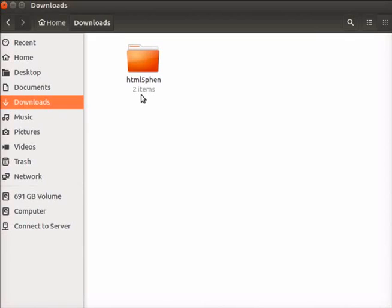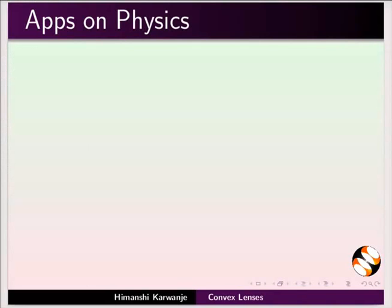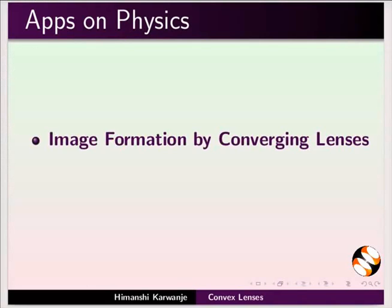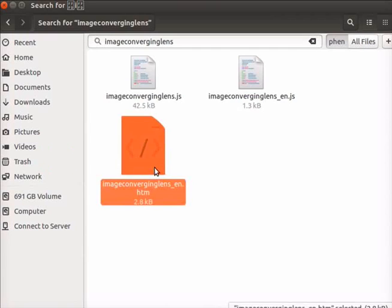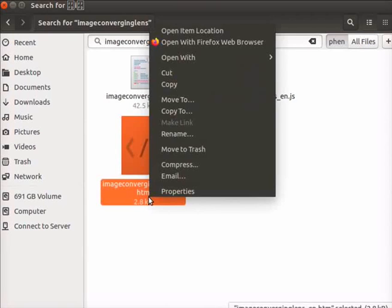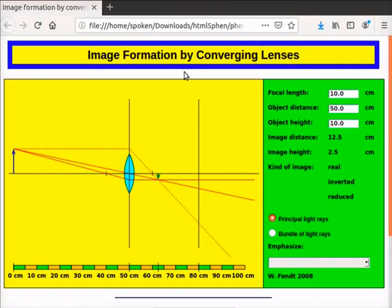I have already downloaded Apps on Physics to my downloads folder. In this tutorial, we will use Image Formation by Converging Lenses and Refracting Astronomical Telescope Apps. Right-click on Image Converging Lens underscore en dot htm file. Select Open with Firefox web browser option. Image Formation by Converging Lenses App opens in the browser.